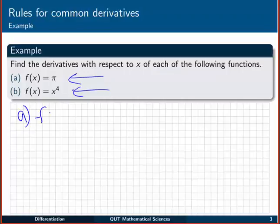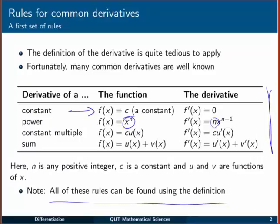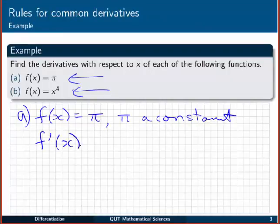Alright, so first up we have f of x equal to π, and π is a constant. The table on the previous slide tells us that when we have a constant as our function, the derivative is always zero. So in this case, f dash of x is equal to zero. The rate of change of π with respect to x is zero.